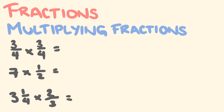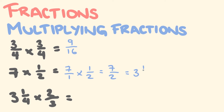Three-quarters squared: three times three is nine, four times four is sixteen — can't be simplified, so the answer is nine-sixteenths. Seven times one-half: write seven as seven over one, times one over two. Seven times one is seven, one times two is two, giving seven over two. Seven divided by two is three with one left over, so the answer is three and a half.